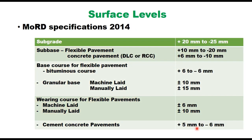MORD specifications suggest a different type of tolerance for surface levels. For subbase in case of flexible pavement, it can vary from plus 10 mm to minus 20 mm. And for subgrade, it can be plus 20 mm to minus 25 mm. Similarly for concrete pavement, when the subbase is used as DLC or roller compacted concrete, the tolerance can be from plus 6 mm to minus 10 mm.